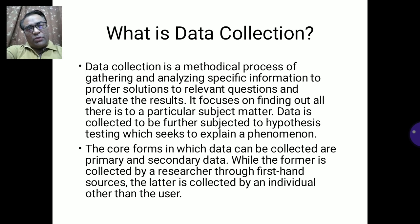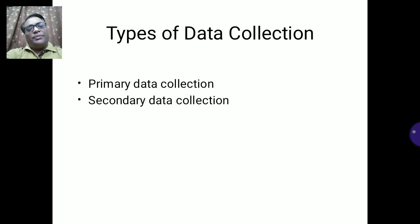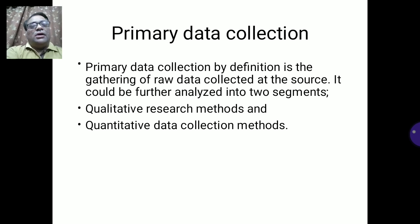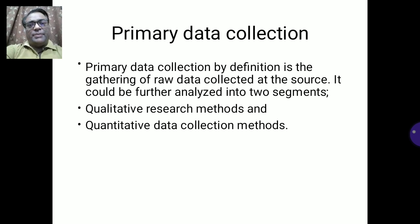Basically, data collection is of two types: primary data collection and secondary data collection. Primary data collection is the gathering of raw data from the source directly, meaning the person doing the analysis collects the data themselves.